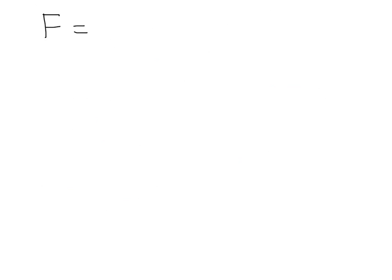So first of all, the force of gravity. If we want to know the force between two objects, we need to know the mass of one of the objects and the mass of the other object. We usually use big M for the bigger mass — so if we're looking at maybe planet Earth and the moon, or the sun and the planets, we put the big mass as M and the smaller mass as m. Force is inversely proportional to the distance between the objects squared — it's one of the inverse square laws that exists.